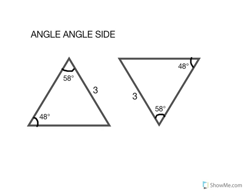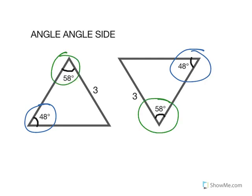Angle-angle-side is congruent if there are two equal angles and the non-included side in the same position on each triangle is equal. For example, we have 48 degrees, 58 degrees, and on the non-included side there is a 3. Thus, these triangles are congruent by angle-angle-side.